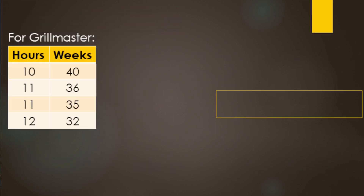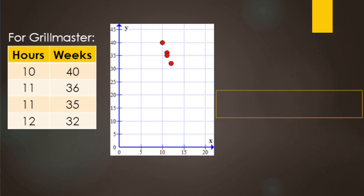Now we circle back to the very first example — the video game players grinding for the grill master skin. Some players went 10 hours per week, some 11, some 12, and we tracked how many weeks it took to earn the skin. We make a scatter plot: 10 hours per week goes with 40 weeks. Then we draw a fitted line for that data and write an equation.